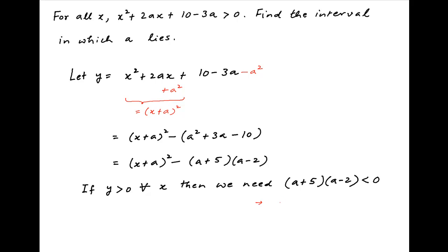Because when this is the case, minus of (a plus 5) times (a minus 2) is positive. And therefore, x plus a whole square, which is a positive number, minus (a plus 5) times (a minus 2) will also be a positive number for all values of x.